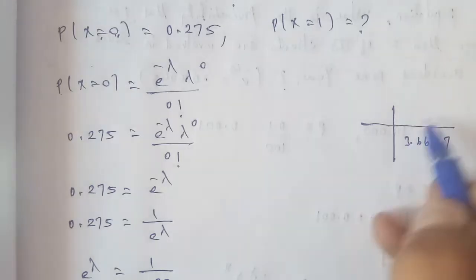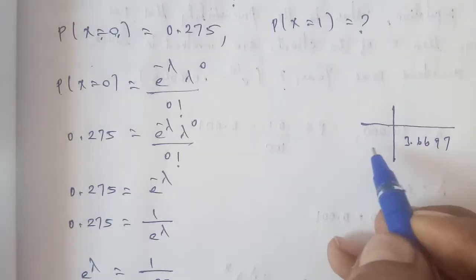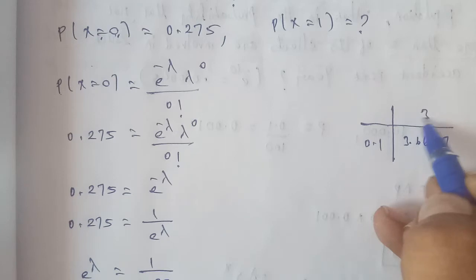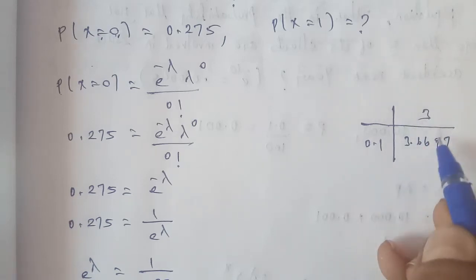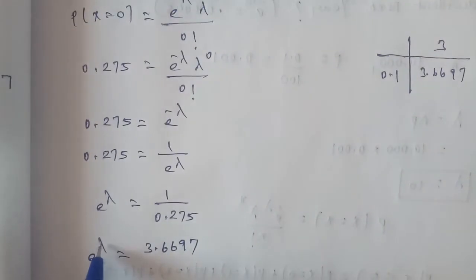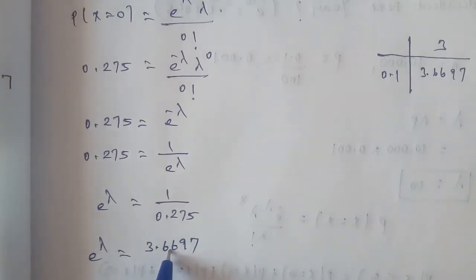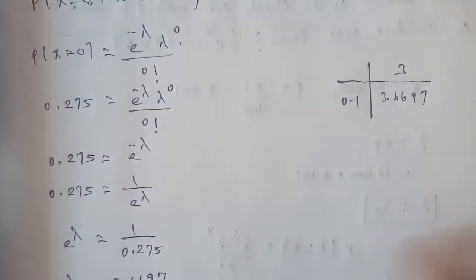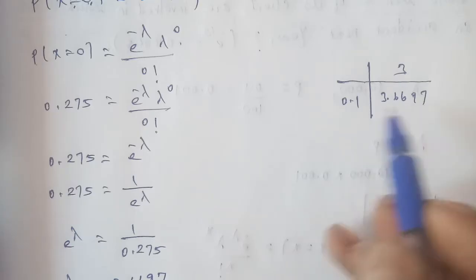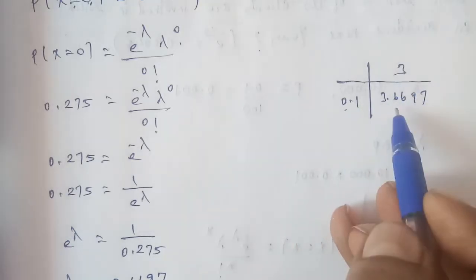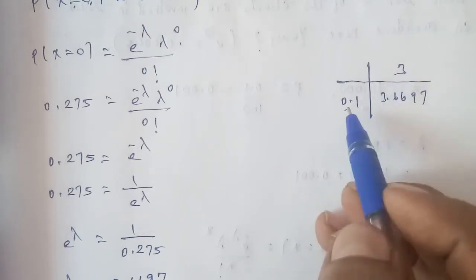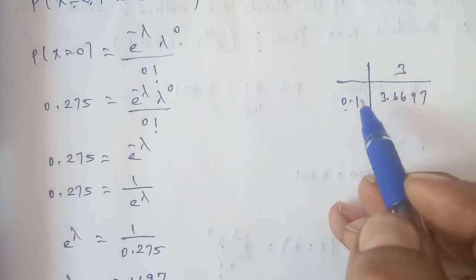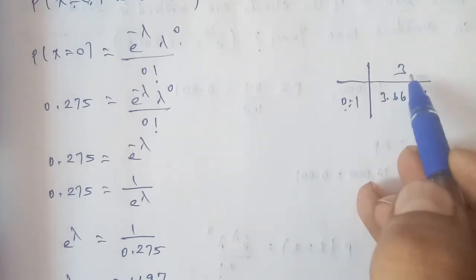From the exponential table, the value 3.6697 corresponds to lambda equal to 1.3. Looking at the table, 0.3 plus 1 gives us 1.3, and the table value for e power of 1.3 is 3.6697.